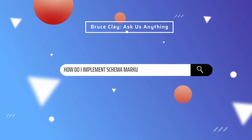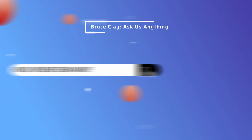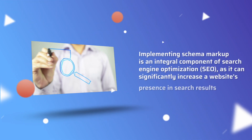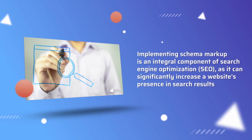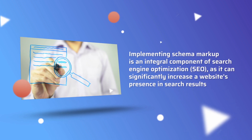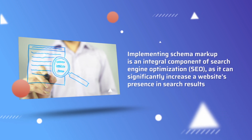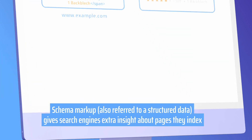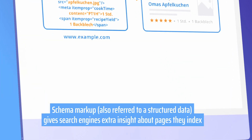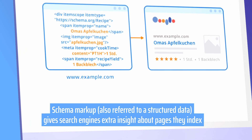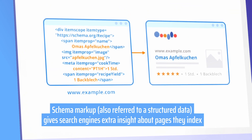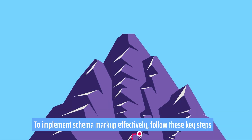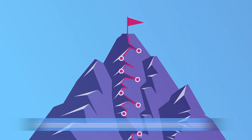How do I implement schema markup? Implementing schema markup is an important component of search engine optimization, as it can significantly increase a website's presence in search results. Schema markup, also referred to as structured data, gives search engines extra insight about pages they index. To implement schema markup effectively, follow these key steps.